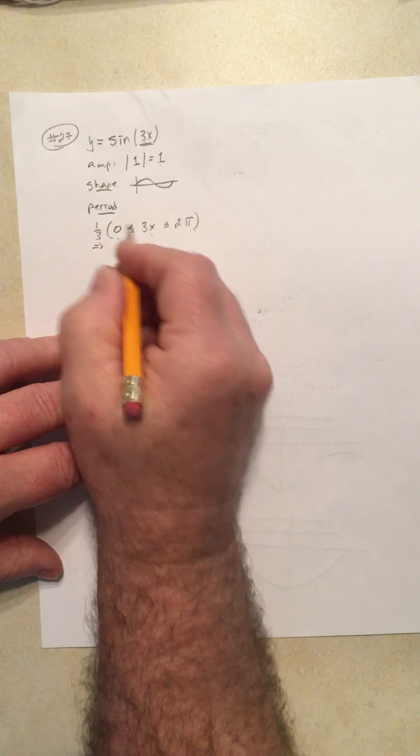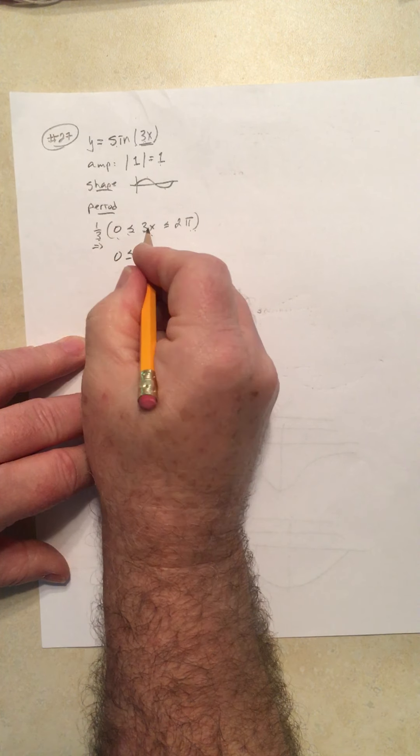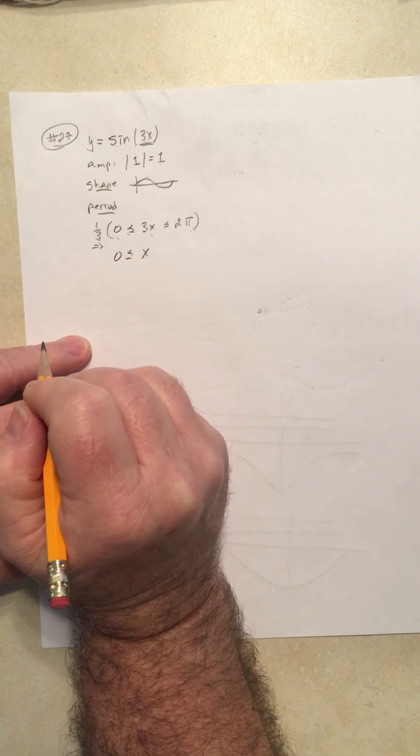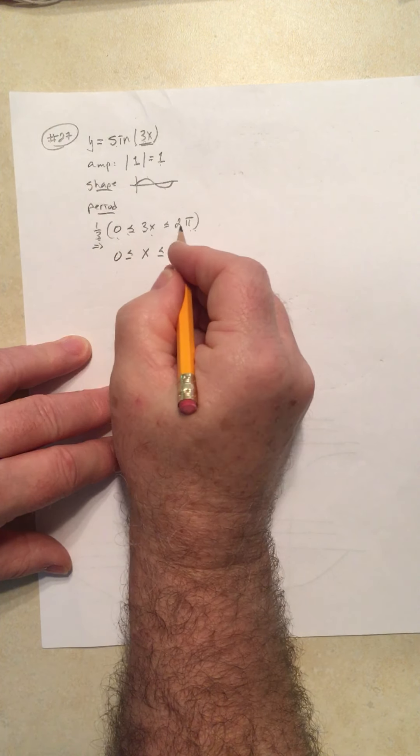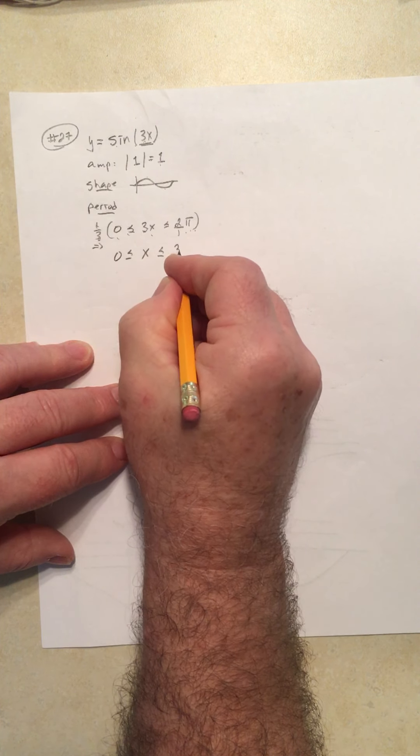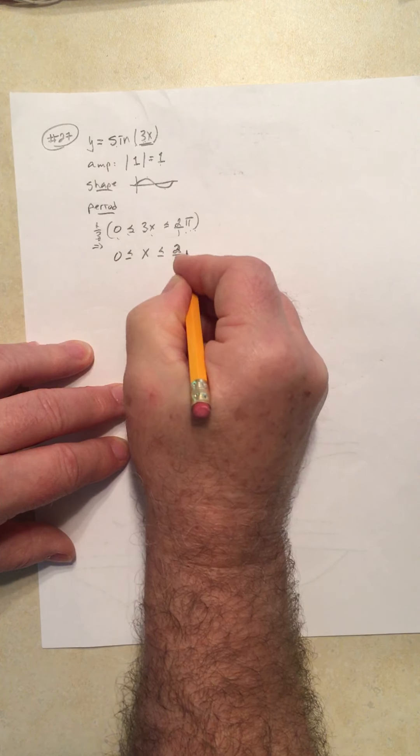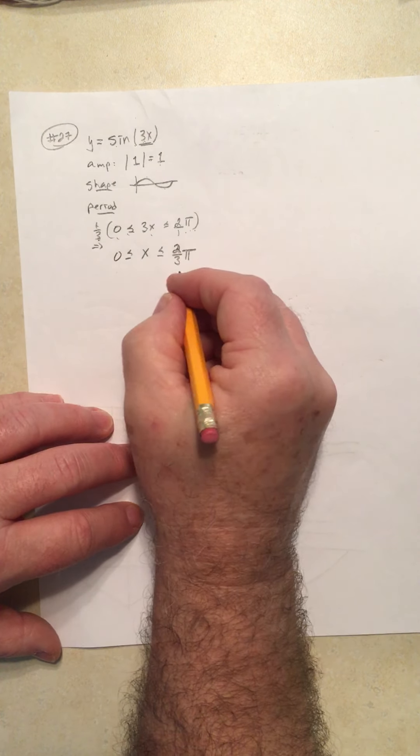Everything gets multiplied by 1/3 to clear this, so 0, 1/3 of 3 is 1, so that's x, and then 1/3 times 2π - this is top times top, bottom times bottom - this is 2/3 π, 2/3 or 2π over 3 if you prefer.